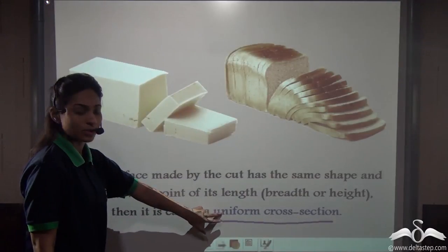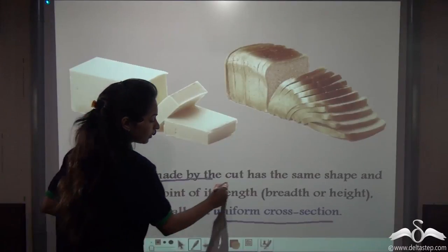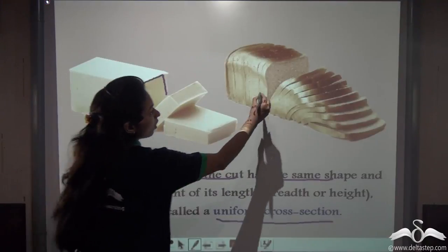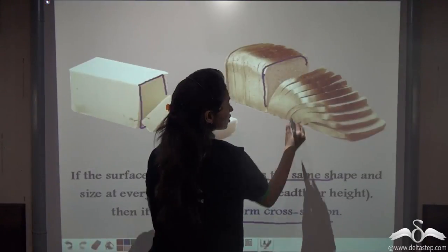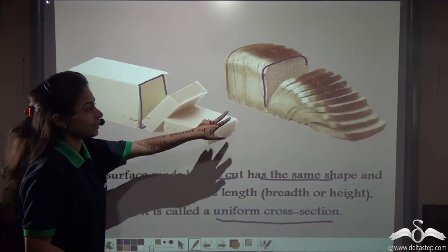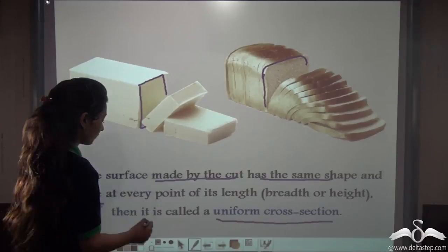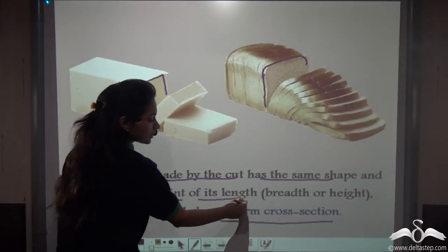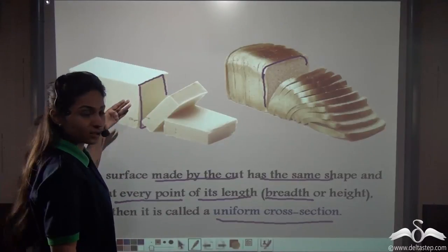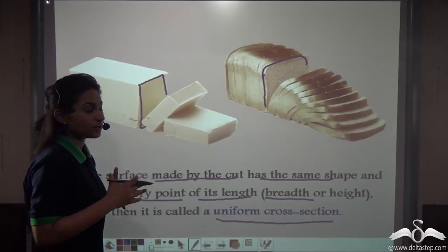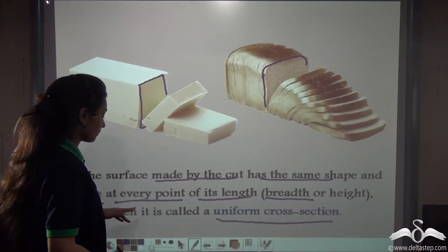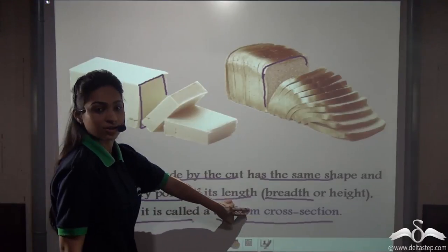What is a uniform cross-section? If the surface made by the cut has the same shape — here you can see they are having the same shape — and each piece of bread has the same shape and size at every point of its length, breadth, or height in whichever way we have cut it. So when each and every face has the same shape and the same size, it is called a uniform cross-section.